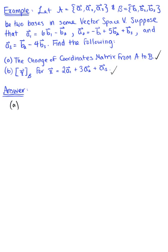In part a, we want to find the change of coordinates matrix from basis a to basis b. So what is this asking us to find? This is asking us to find the matrix whose column vectors are the coordinates of basis a relative to basis b.